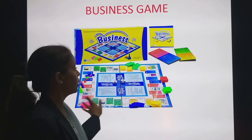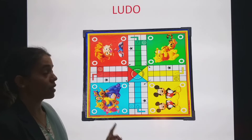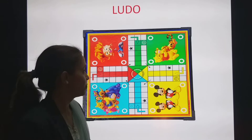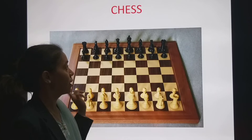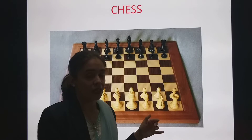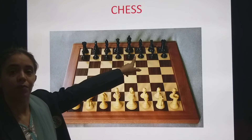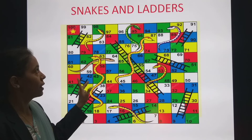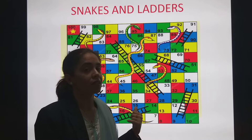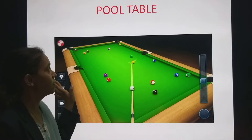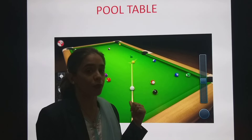So once again let's repeat all the indoor games. The first is Ludo — L for Ludo. Then the next is Chess — C for Chess. In Chess there are two colors: white and black. Then the next is Snakes and Ladders. Then Pool Table. Which game is this? Pool Table.